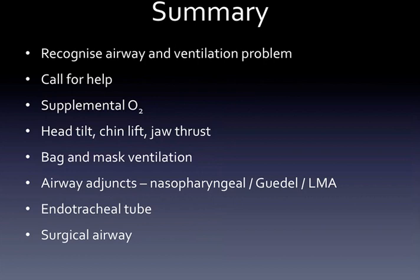In summary: when facing acute airway failure and obstruction, recognize the problem, call for help immediately, give supplemental oxygen, and do the basics — head tilt, chin lift, and jaw thrust are moves that save lives. Grab a bag and mask and start ventilation. Use airway adjuncts if available, such as a Guedel or nasopharyngeal airway. Then escalate to more specialized interventions such as endotracheal intubation and surgical airway as needed. Thanks very much for listening — hopefully you learned something.